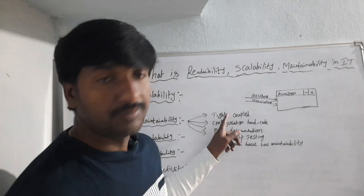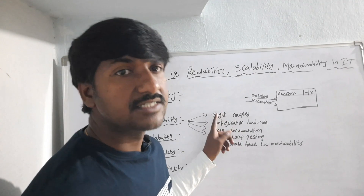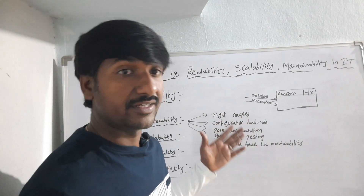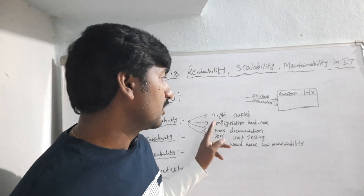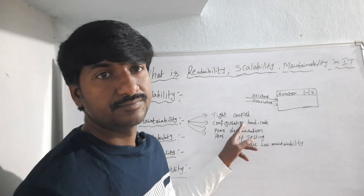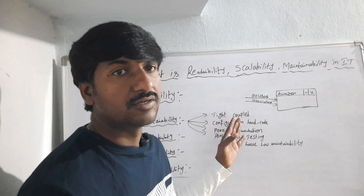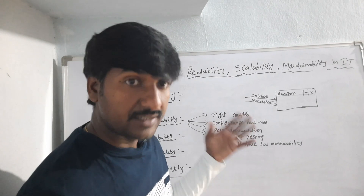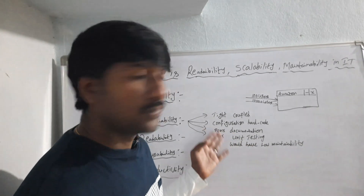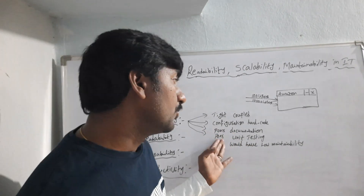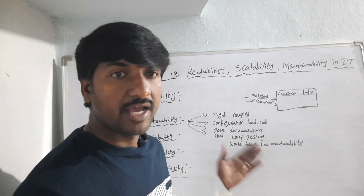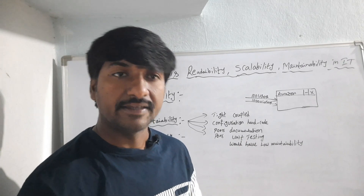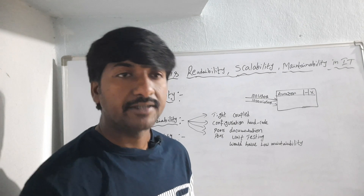The first reason is tight coupling — if the application is tightly coupled with another system, it may not be easy to maintain the software in future. The second reason is hardcoded configuration — if you have done configuration with hardcoded values, it may not be easy to maintain the code in future. Also, poor documentation and poor unit testing will result in low maintainability. That is why maintainability is an important part of developing a project.